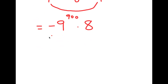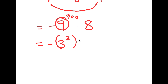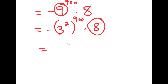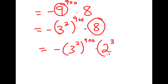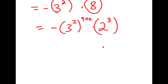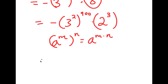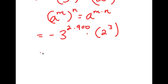I can rewrite negative 8 as 8 times negative 1, and multiply negative 1 with 9 to the power of 900 to get negative 9 to the power of 900 times 8. Now I can rewrite 9 as 3 squared, so I get 3 squared to the power of 900 times 8. And 8 I can rewrite as 2 to the power of 3, so I have negative 3 squared to the power of 900 times 2 to the power of 3. Remember, a to the power of m to the power of n equals a to the power of m times n, so this equals negative 3 to the power of 2 times 900 times 2 to the power of 3. Since 2 times 900 is 1800, I have negative 3 to the power of 1800 times 2 to the power of 3.